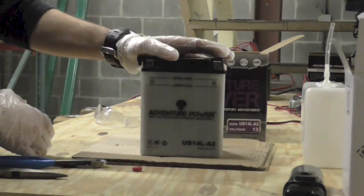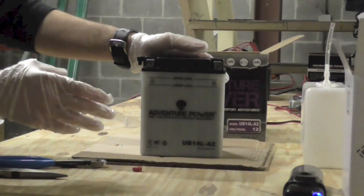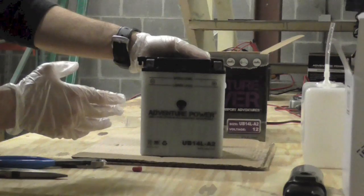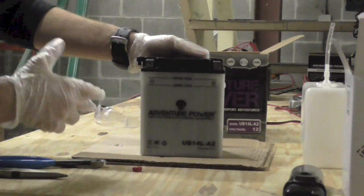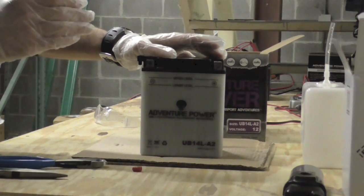The last step is going to be to put this battery on charge. Just because you've filled the battery up with acid doesn't mean it's ready to go. The acid is positively charged, so it will bring the charge level of the battery up to around 40%, maybe 50%. But you will need to place the battery on charge to get it up to the full 100%.